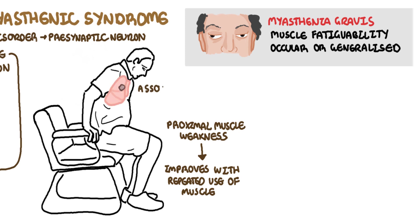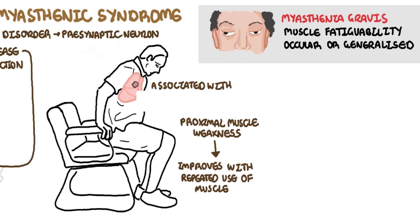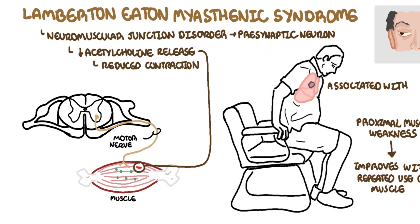Lambert-Eaton Syndrome is a paraneoplastic syndrome because of its association with small cell lung cancer. Paraneoplastic syndromes can be described as an immunological phenomenon, but really are symptoms that occur at sites distant to where the tumor is.